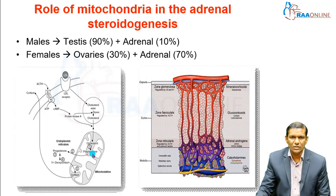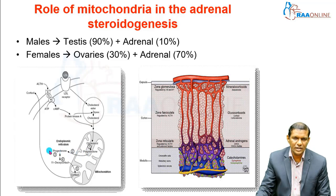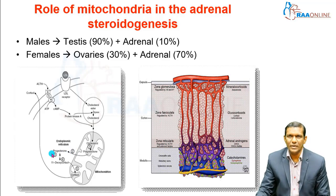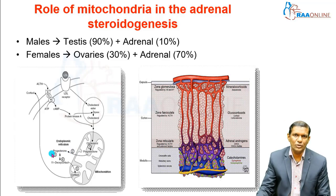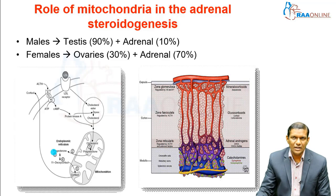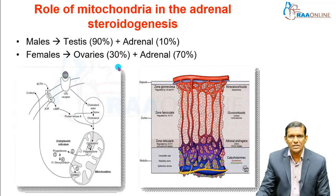Pregnenolone then exits the mitochondria into the cytoplasm, where the next steps of synthesis occur through the major pathway — pregnenolone to dehydroepiandrosterone, then androstenedione, then testosterone. This is the role of mitochondria in adrenal steroidogenesis.